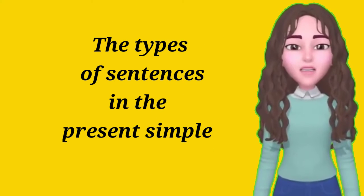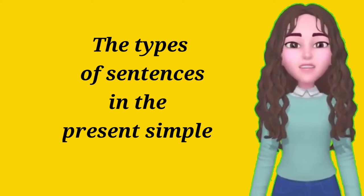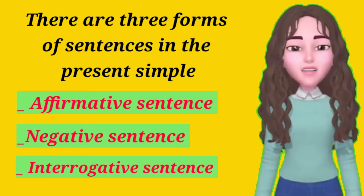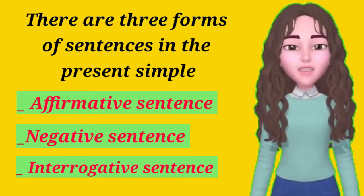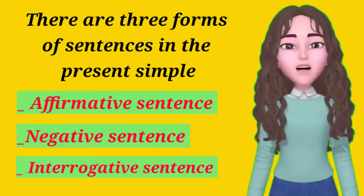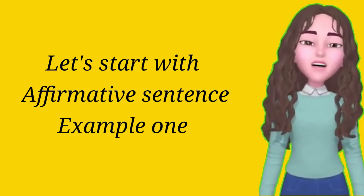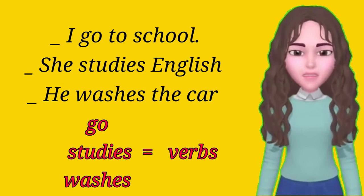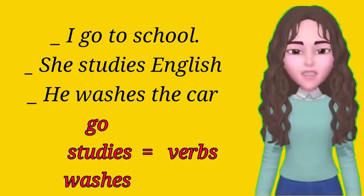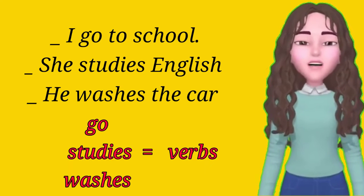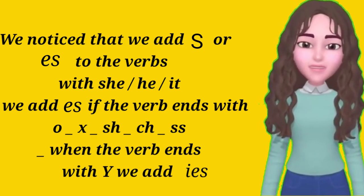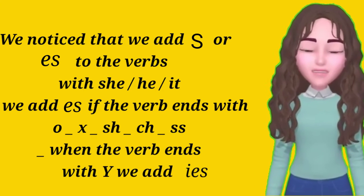There are three types of sentences in the present simple: affirmative sentence, negative sentence, and interrogative sentence. Let's start with the affirmative sentence. Example one: I go to school, she studies English, he washes the car. The verbs in the sentences — go, studies, and washes — show that we add -s or -es to the verbs.